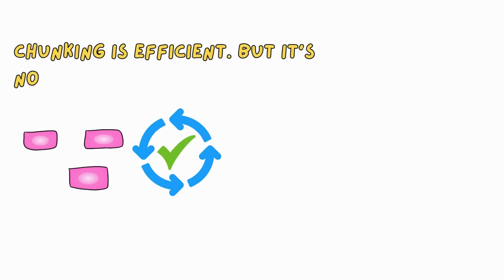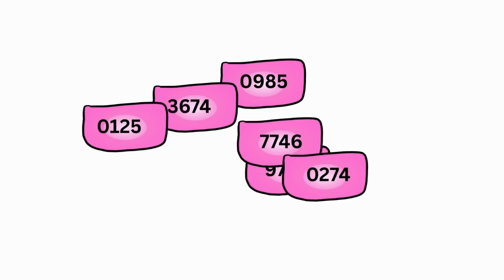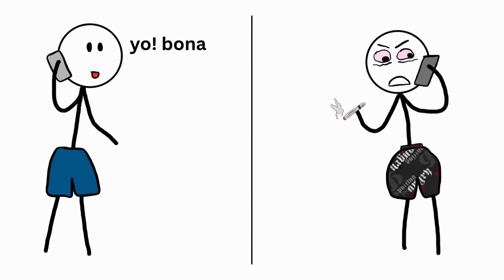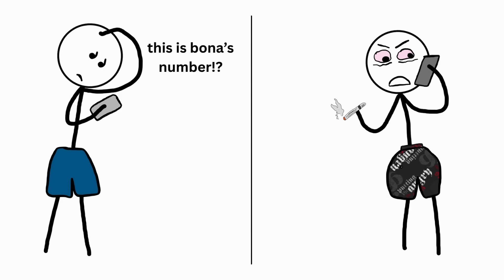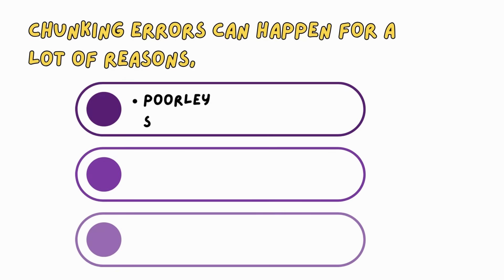Now, while chunking is efficient, it's not perfect. Sometimes, these chunks can get mixed up. And suddenly, you have a stranger on the other end of the call asking you who you are when you could swear that's your friend's number. Chunking errors can happen for a lot of reasons, from poorly structured chunks to overly broad chunks.